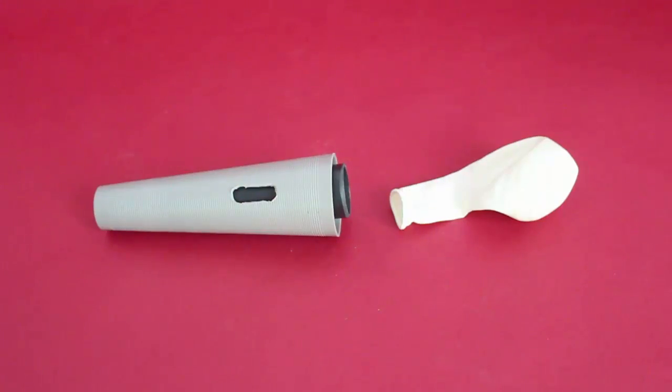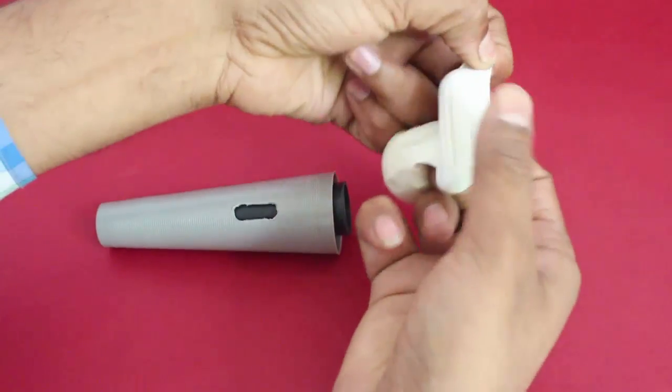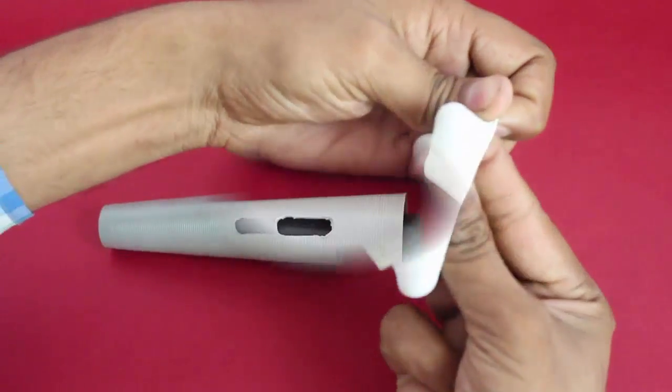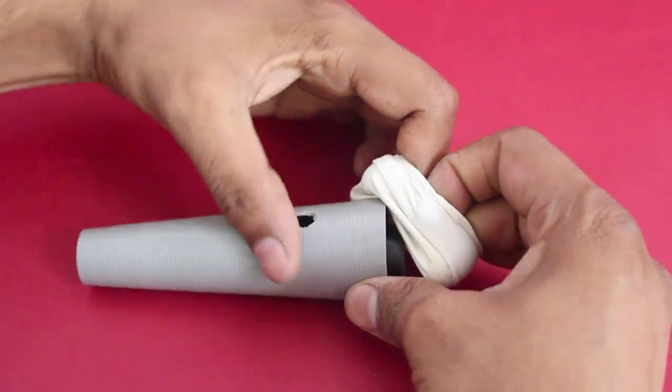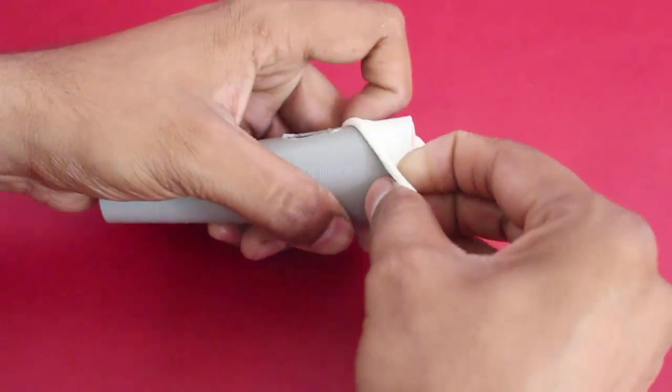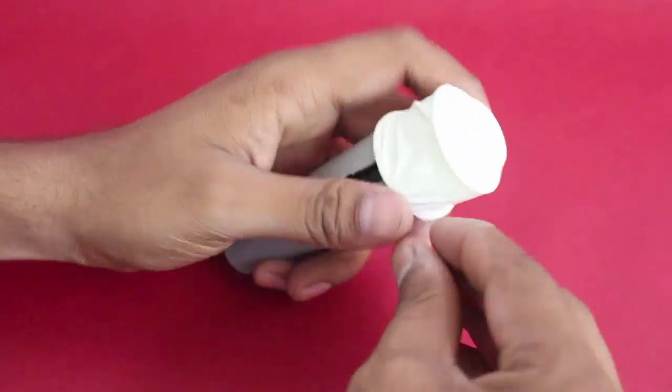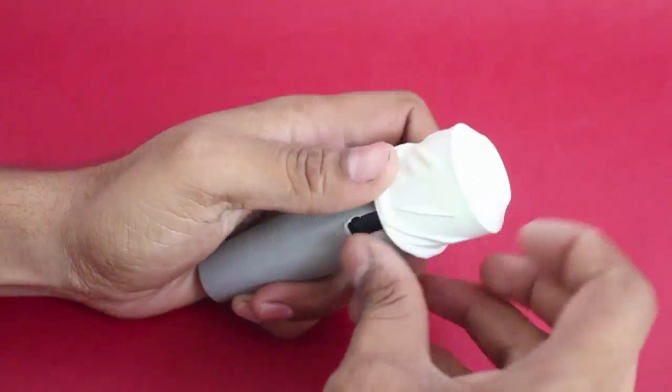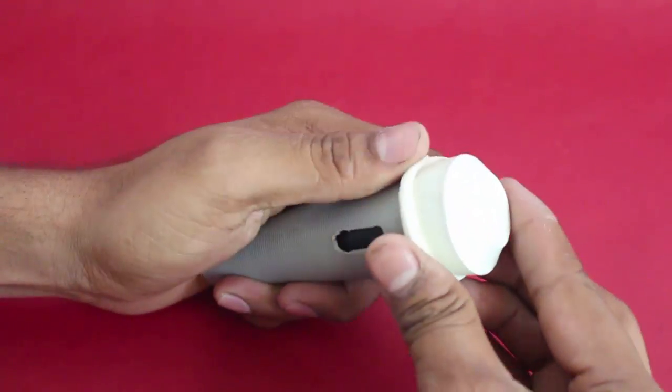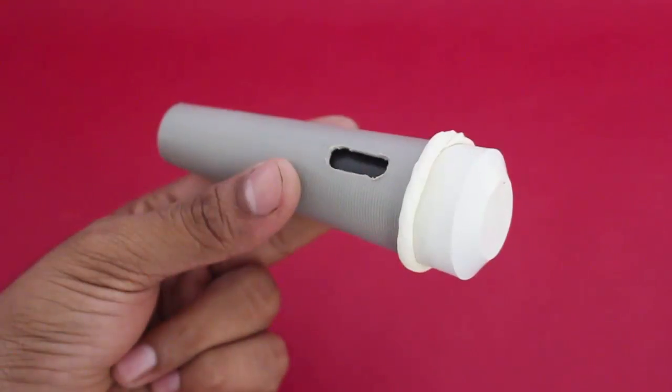Then stretch out a good quality balloon on the large end of the cone. This balloon will act like a membrane. It will be a stretched membrane. Secure the membrane in place with the help of a rubber band. And now your loud whistle is ready.